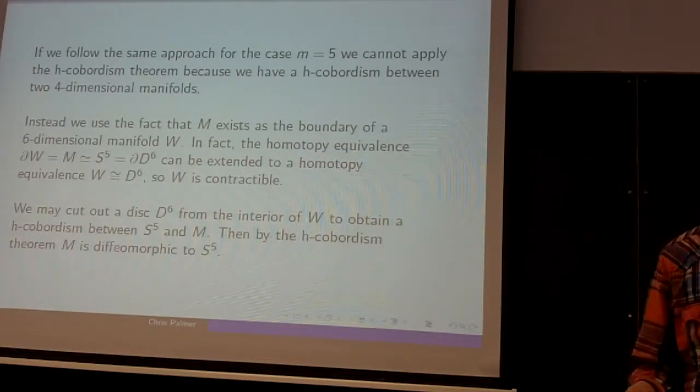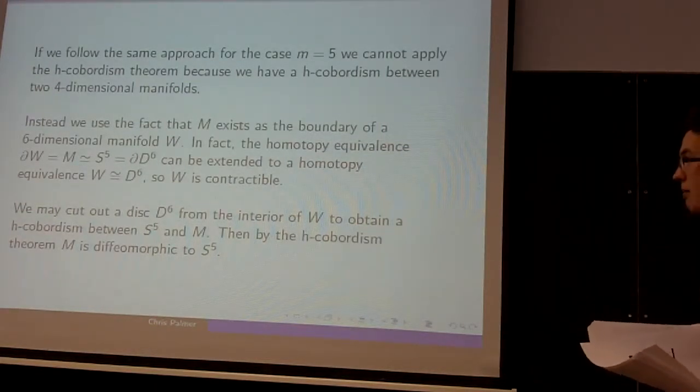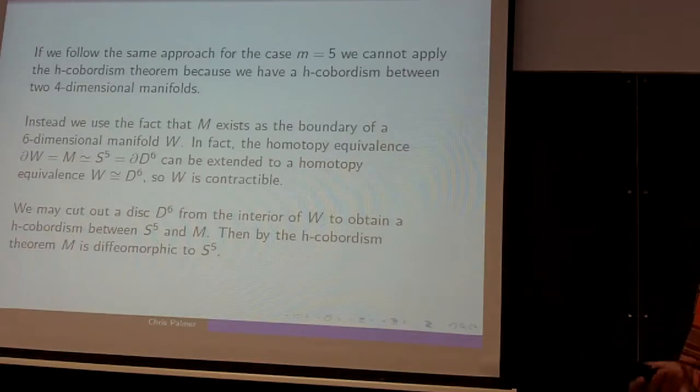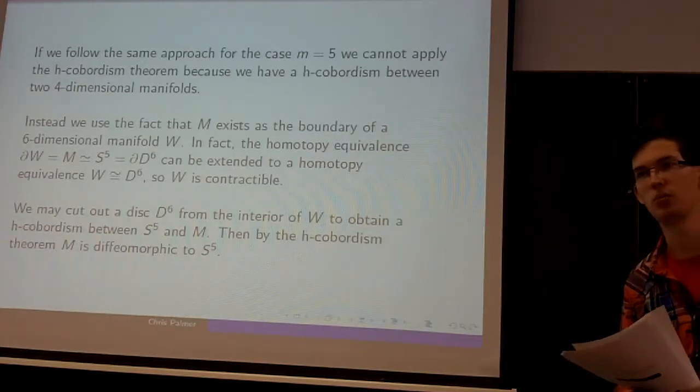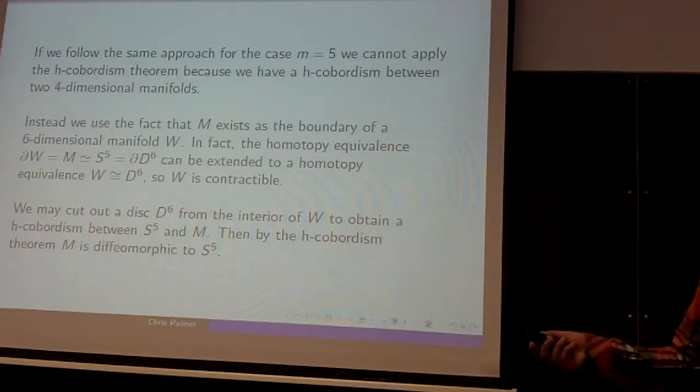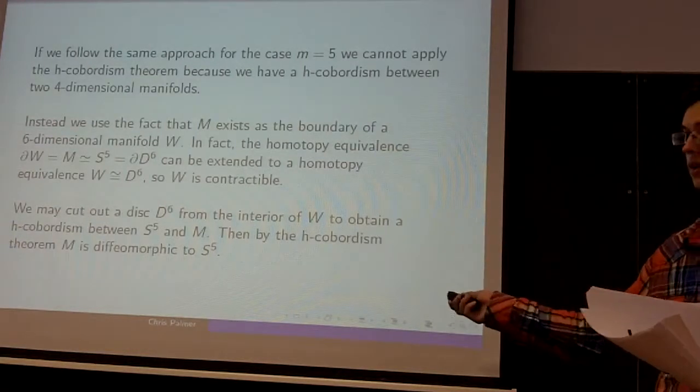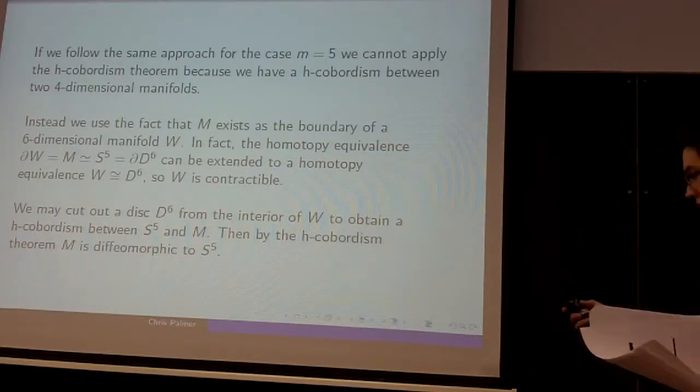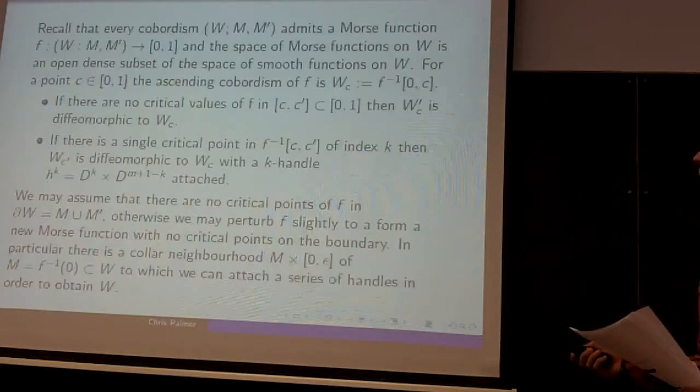So in this case, we actually get there's a diffeomorphism between M and S^5. If you recall the notion of an exotic sphere of dimension N, this is some smooth N-dimensional manifold which is homeomorphic to S^N, but not diffeomorphic. So we've just shown, in fact, that there are no exotic five spheres. There's only one smooth structure.